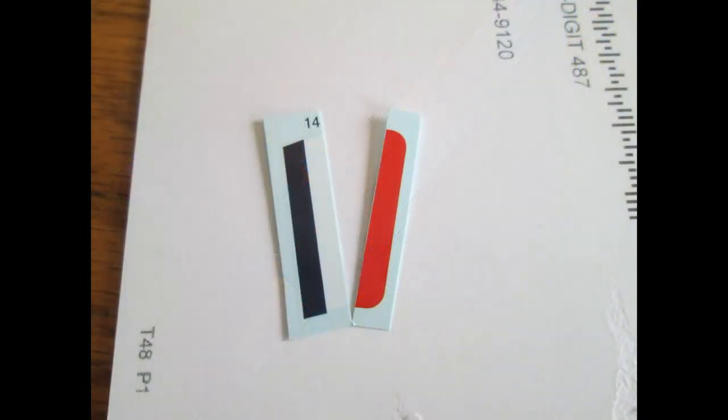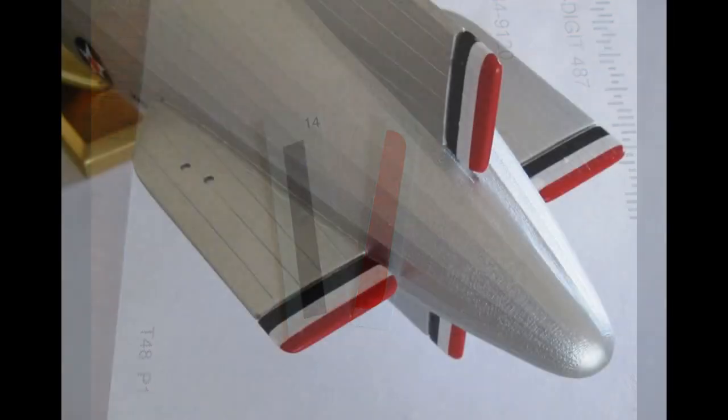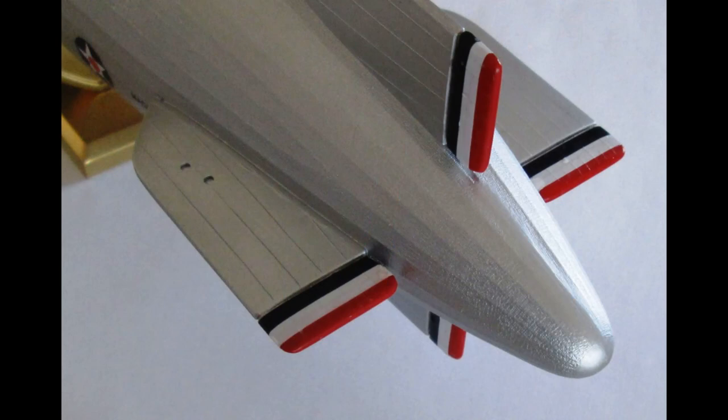Now we can begin adding our decals to the model. As you can see, the stabilizers have the red, white, and blue stripes. I applied those per the instructions. The braces for the rudder assist are installed over the top of these, so we're going to put these into place with the red ends painted so there's no gap there. After the decals dry, we'll just poke a hole in them where the stabilizers go to provide a gluing point for those braces.